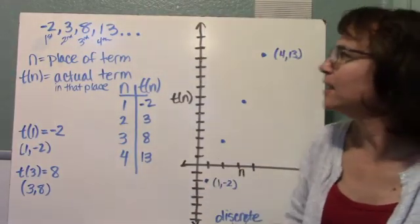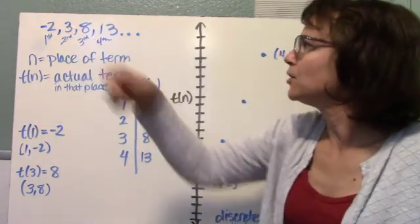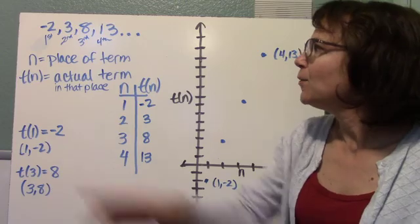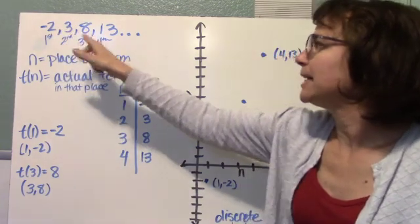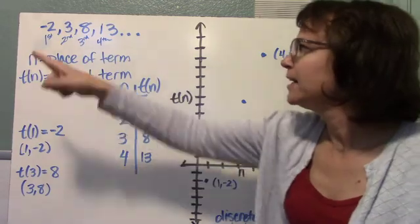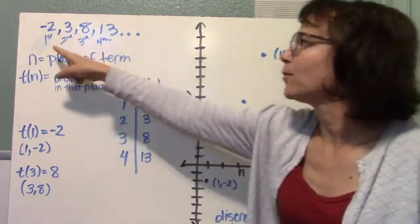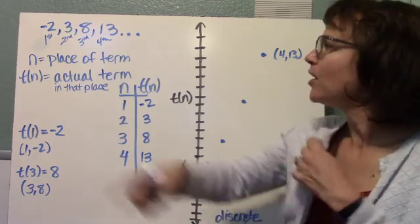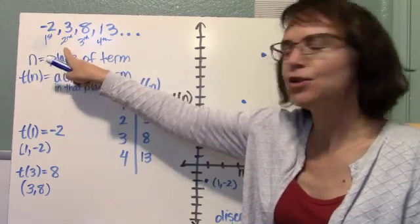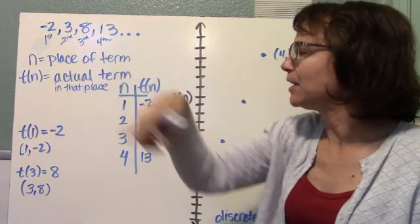Now, if we take a look at the arithmetic sequence, negative 2, 3, 8, 13, this dot dot dot means continues on. We notice that each term has a place. So this is the first place, second place, third place, fourth place of the term. This first, second, third, fourth, or 1, 2, 3, that's n. We call that n the place of the term. So here, n equals 1, n equals 2, n equals 3, and n equals 4.